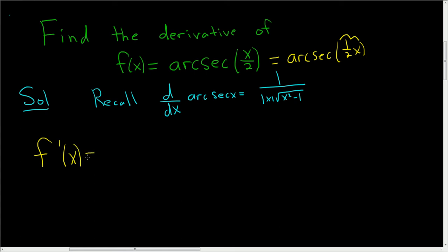So f'(x) will be 1 over the absolute value of x/2 (or 1/2 x) times the square root of—using the formula—and then x is x/2. So (x/2) squared minus 1, times the derivative of the inside. So the derivative of the inside is the derivative of 1/2 x, which is 1/2.